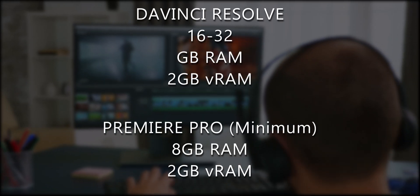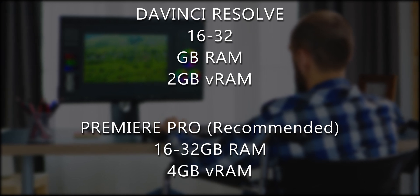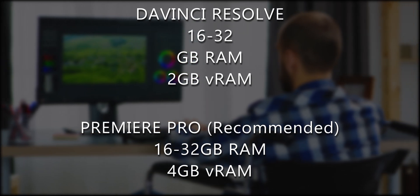As it turns out, the system requirements for Premiere Pro and DaVinci Resolve on Mac are the same as they are on Windows. Premiere Pro requires 8GB of RAM while Resolve requires 16, and they both require 2GB of VRAM. Once again, Premiere Pro has recommended system specs that are much more in line with DaVinci Resolve's minimum system requirements. The only difference between Mac and Windows is that Premiere Pro can run on an older version of macOS — Premiere Pro requires macOS 10.13 or later, while DaVinci Resolve requires macOS 10.14.6. So it looks like Premiere Pro might actually suit you better if you're on an older, slower computer, whether it's Mac or Windows.